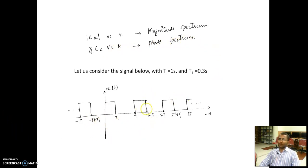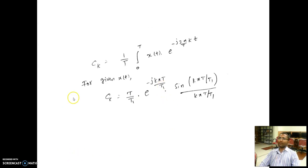In class, we solved this problem where x(t) is a rectangular train whose duty cycle is given by t1 over capital T. Here t1 is 0.3 seconds and capital T is 1 second. We derived the Fourier series coefficients using the formula and obtained c_k equal to (T/t1) times e to the power minus jkπ(t/T1) times sinc(kπT/t1) divided by kπT/t1. For k equal to 0, this becomes a 0/0 form, which we computed explicitly as capital T over t1.